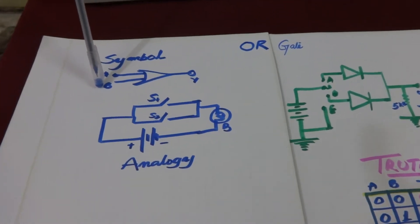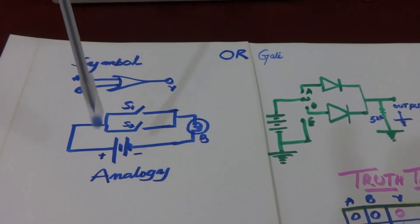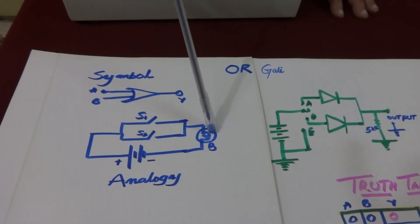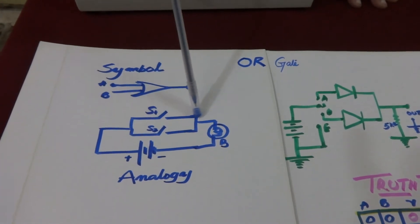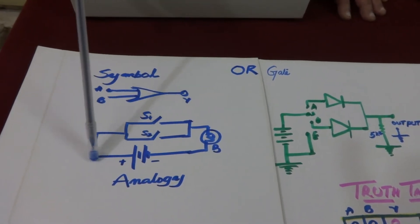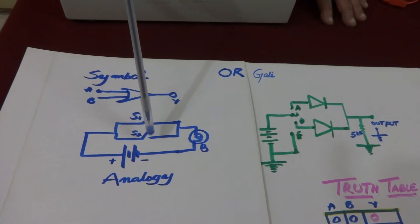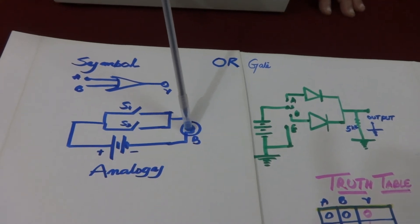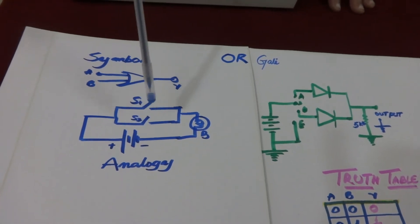A and B are the two inputs, and Y is the output. The OR gate can be represented with this analogy: two switches S1 and S2 connected across a battery and a bulb. If S1 is closed, current passes through that path and the bulb glows. Even if S2 is closed and S1 is open, current passes through the second switch and the bulb glows. If both switches are closed, current passes through both paths and the bulb still glows.